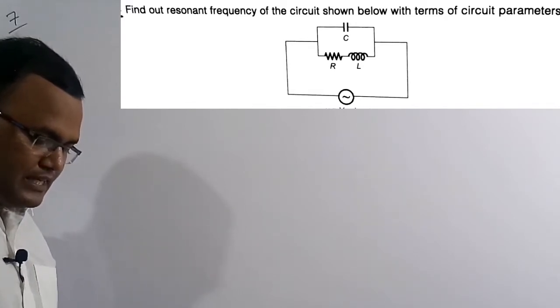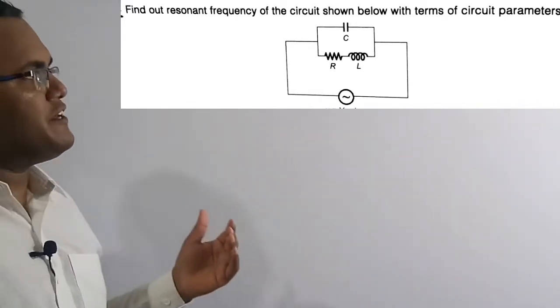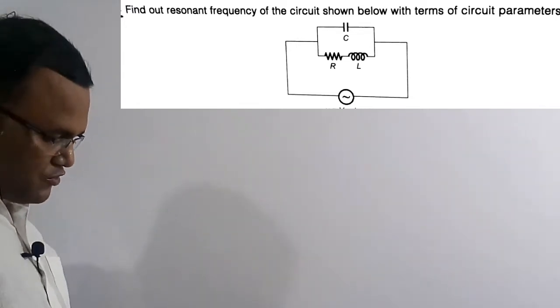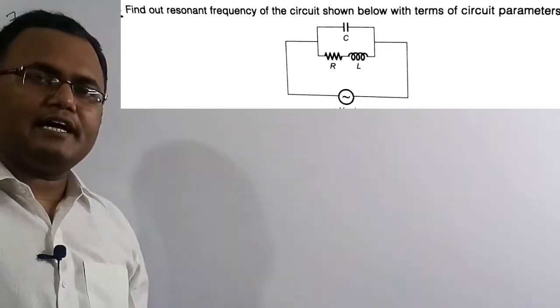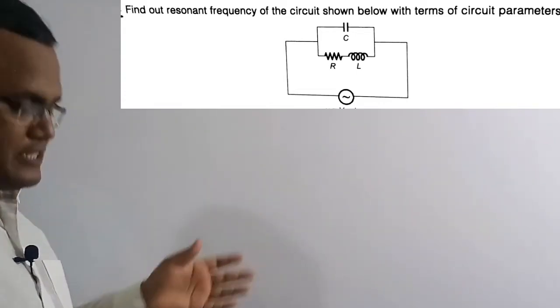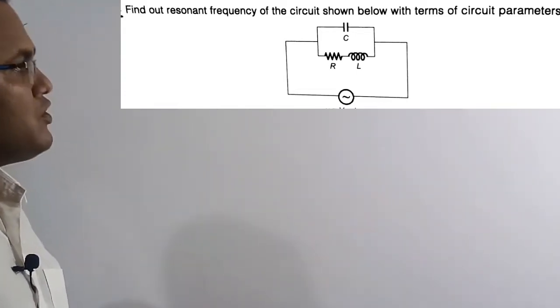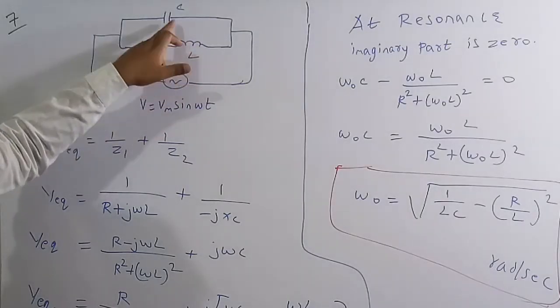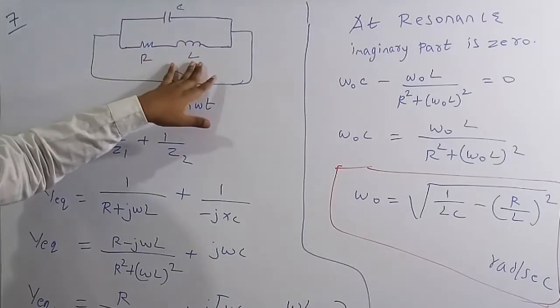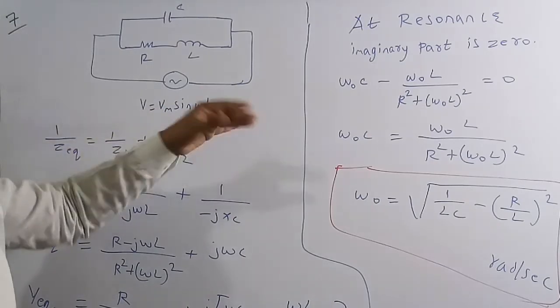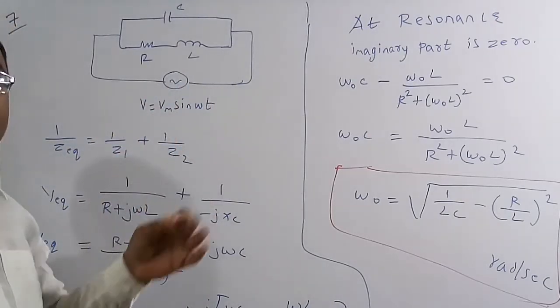Now the seventh question: find the resonant frequency of the circuit shown below in terms of the circuit parameters. The circuit is a parallel RLC — a resistor and inductor connected in series, in parallel with a capacitor, with a voltage source v = Vm·sin(ωt). This question is from IES Mains 2006 for 12 marks.